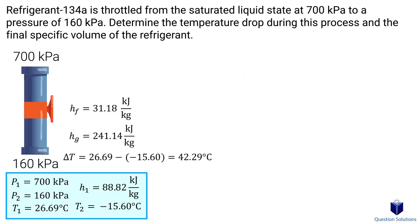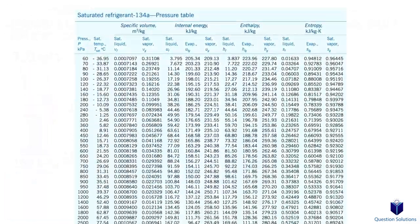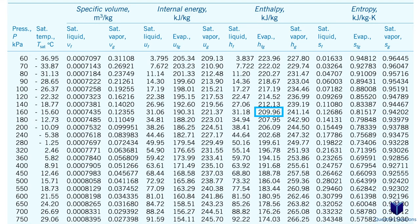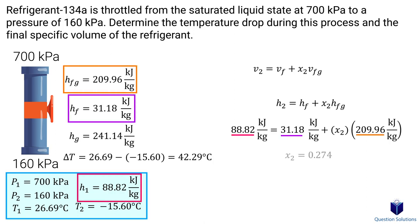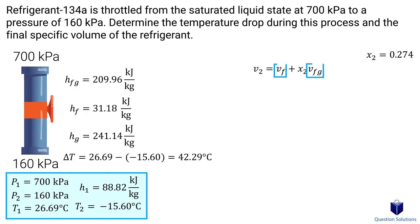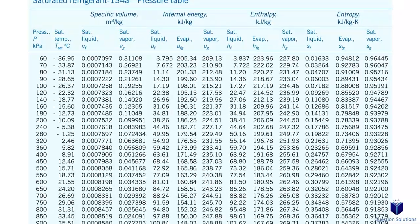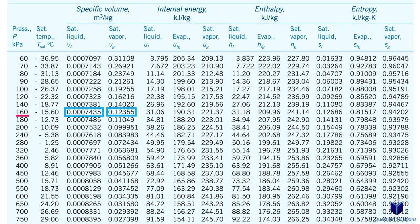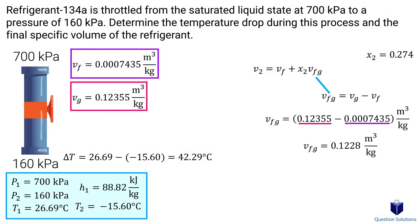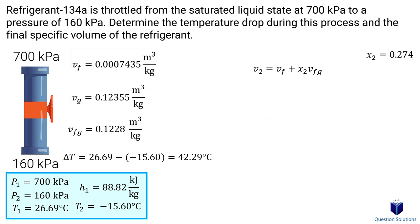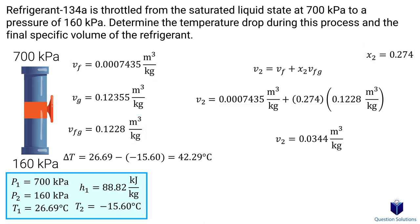The next part of the question asks us to find the final specific volume of the refrigerant. We use the quality equation to find specific volume: v = v_f + x * v_fg. First we solve for quality x using the enthalpy values at 160 kilopascals. We find the enthalpy of vaporization from the table at 160 kilopascals. Then we also need the saturated liquid and saturated vapor specific volumes from the same table, since v_fg is just the difference between the two. Plugging in all values gives us the final specific volume of the refrigerant.